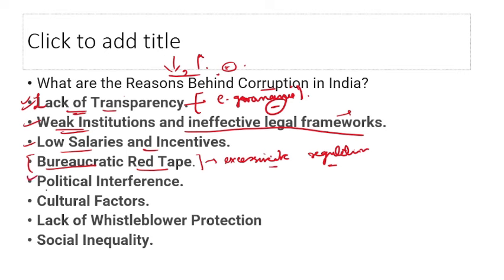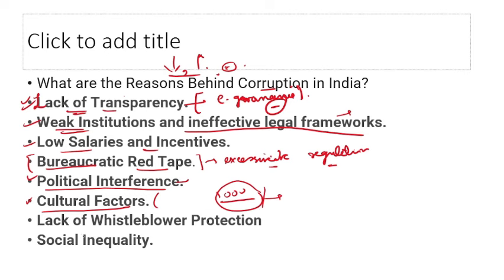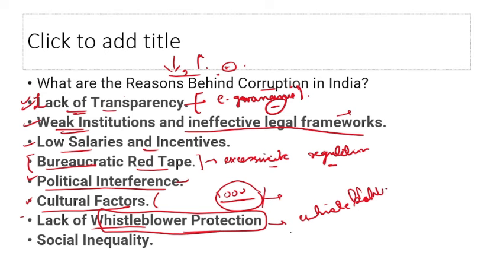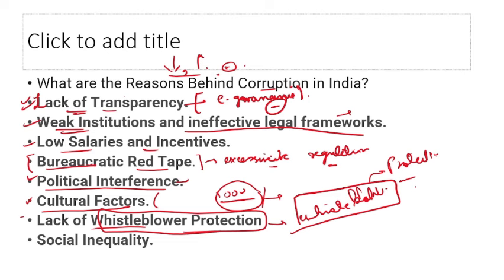Political interference — politicians call officials to get their work done. Cultural factors — when everyone seems to be doing it, individuals feel it doesn't matter if they do it too. Lack of whistleblower protection — whistleblowers are employees who raise their voice against wrongdoings in their organization. Without proper government protection, they fear for their lives and stay silent, allowing corruption to continue.